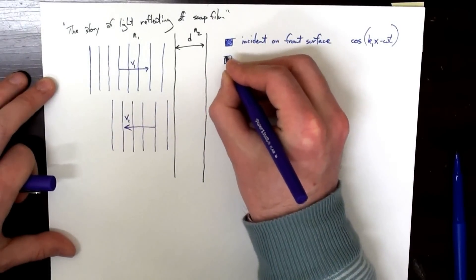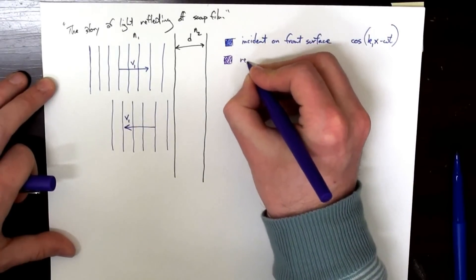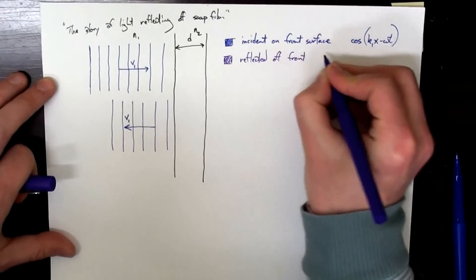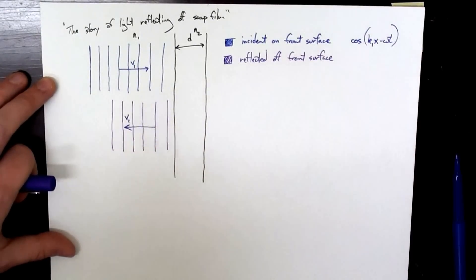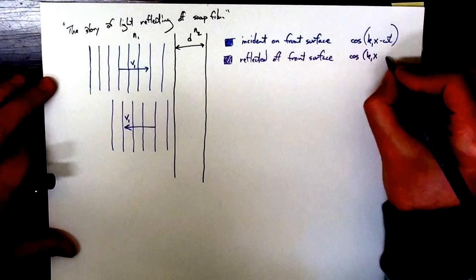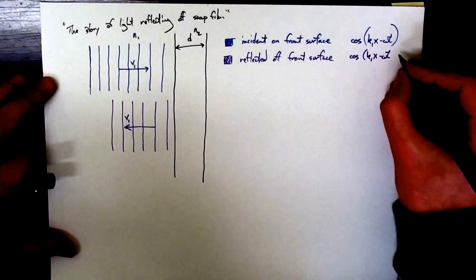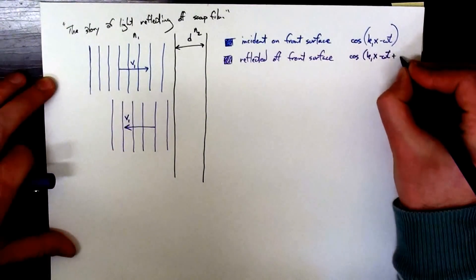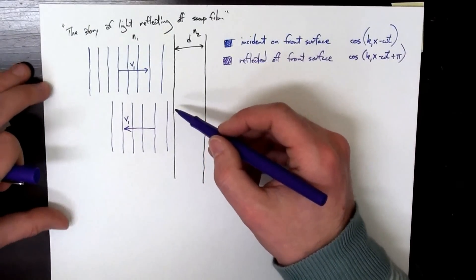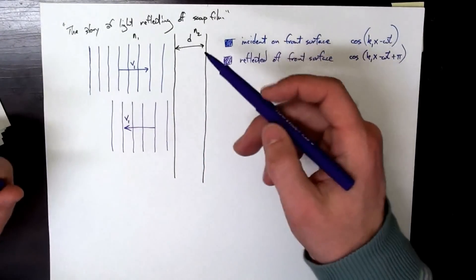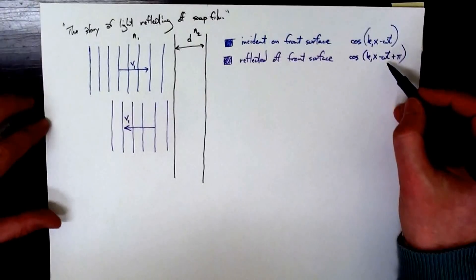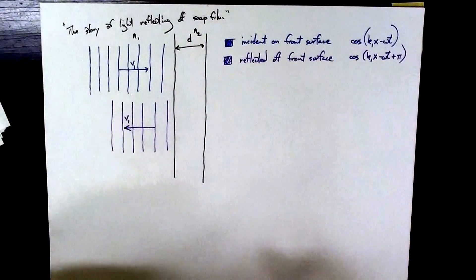Now the reflected wave, reflected off the front surface. That is described by cosine K1, X, minus omega t, plus pi. Now why pi? Well, it gets a pi phase shift. So this is just like a string reflecting off of a fixed point. So the amplitude has to flip. It flips sign, which we could accomplish using just a pi phase shift.